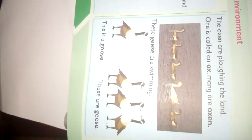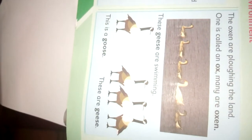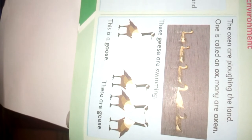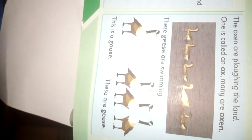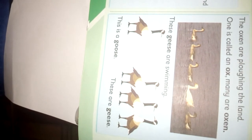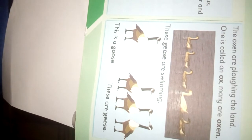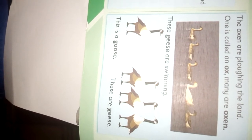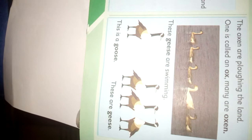What is happening, my dear learners? You can see the two oxen. What are they doing? They are plowing the land. When we talk about irregular nouns, we talk about nouns where you don't just add 's' for the plural — you change it by adding 'en', or double 'e', or change it to 'i'. So one is called an ox and many are called oxen.